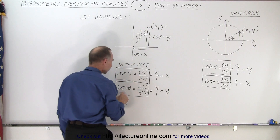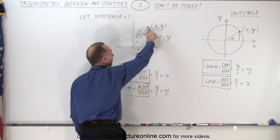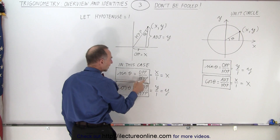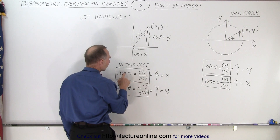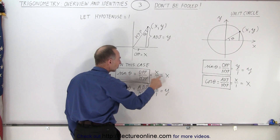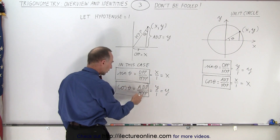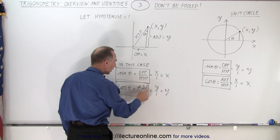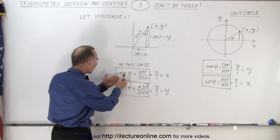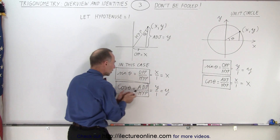For the cosine, it's the adjacent side divided by the hypotenuse, and the adjacent side is the y value. So essentially, the hypotenuse being equal to 1, the sine of theta is the opposite side divided by the hypotenuse, which is x over 1, which is x. And the cosine of theta, which is the ratio of the adjacent side to the hypotenuse, is y over 1, which is y. So in this case you can see that the sine is associated with x, and the cosine is associated with y.